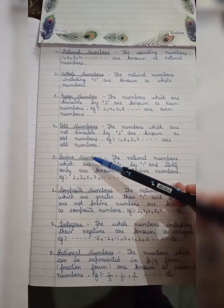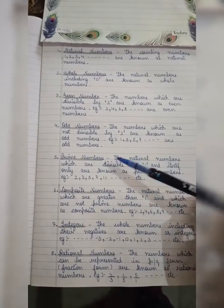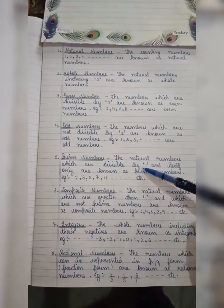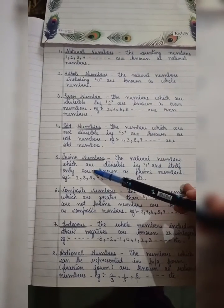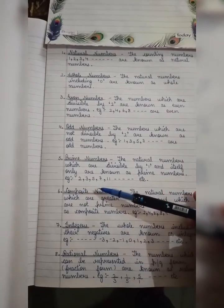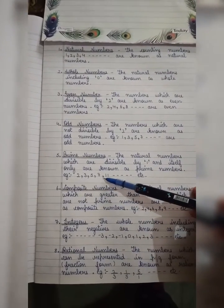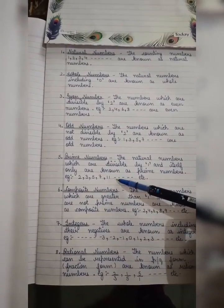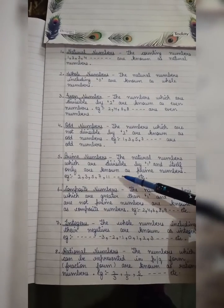Prime numbers - the natural numbers which are divisible by 1 and itself only are known as prime numbers. Example: 2, 3, 5, 7, 11, 13, etc.